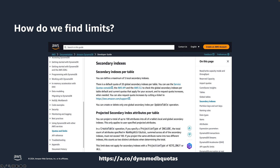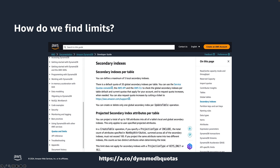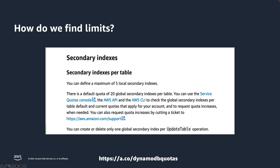Remember earlier when I said I would give a tip on how to spot a soft limit — the limits page gives fairly strong indications. If a limit is hard, it will probably be listed briefly with no mention of a quota. However, if it can be increased, you will often see wording explaining you can use the Service Quotas console to request a higher limit.